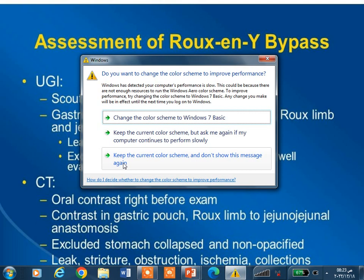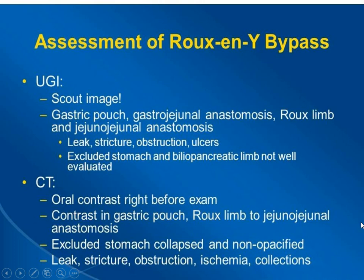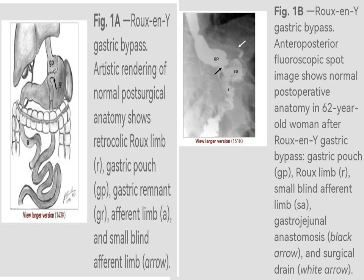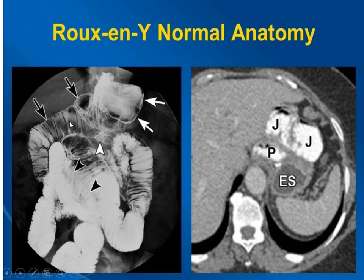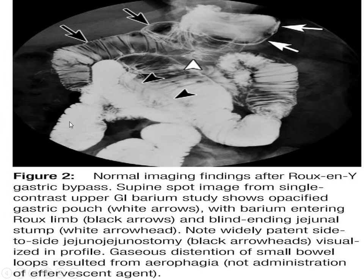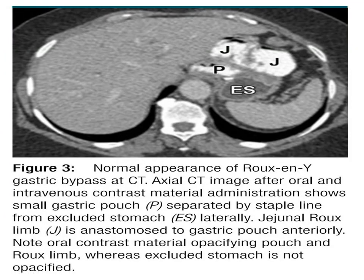The excluded stomach and biliopancreatic limb are not well evaluated by upper GI imaging except when there is a large complication. CT imaging similarly looks at the gastric pouch and the Roux limb with the jejuno-jejunal anastomosis. This upper GI image shows the small gastric pouch and the gastro-jejunostomy. Here is the drainage tube showing the Roux limbs — this is a normal image. Another picture shows the normal appearance of upper GI imaging after Roux-en-Y bypass, with the small gastric pouch and excluded stomach visible.